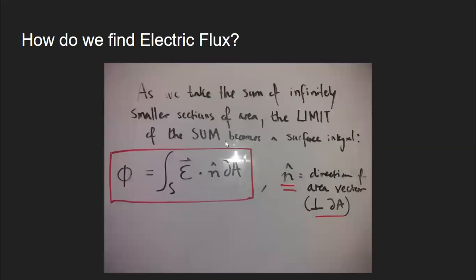As we take the sum of these infinitely smaller sections of area, the limit of the sum becomes a surface integral, where the n hat is the direction of the area vector. Again, it is perpendicular to the surface, partial surface area, thus yielding the following equation for electric flux.